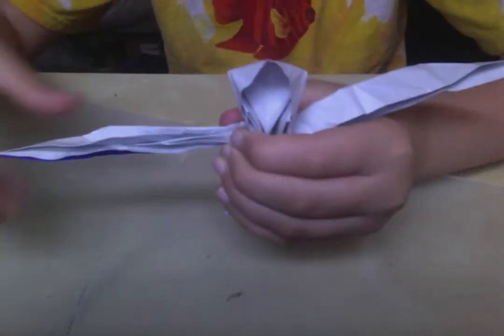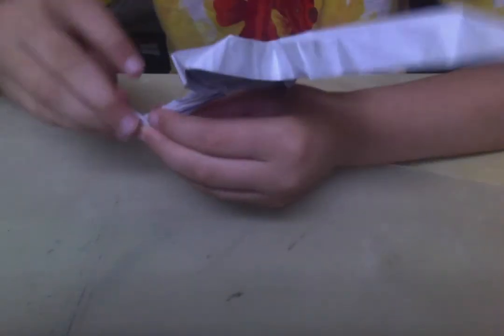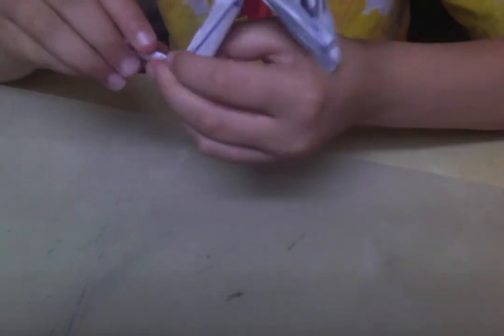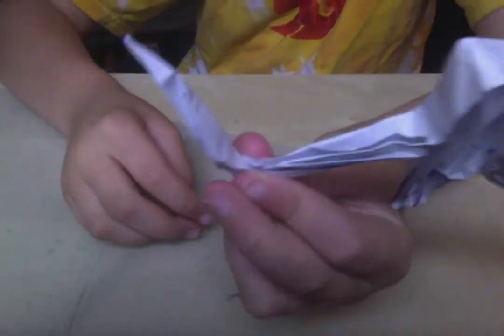And for the sword, we're going to rabbit ear the entire arm in half. And fold up. And then mountain fold. And then we'll just like set.